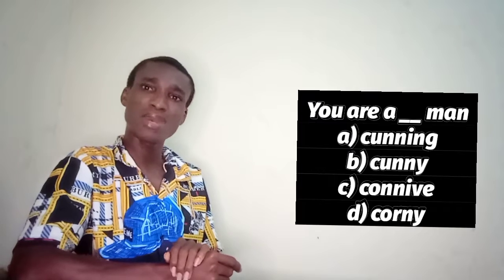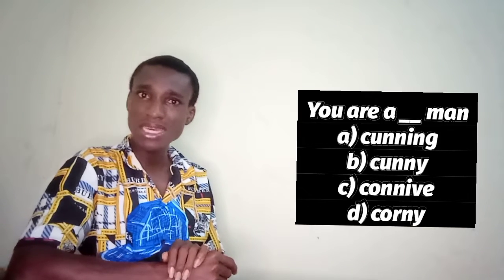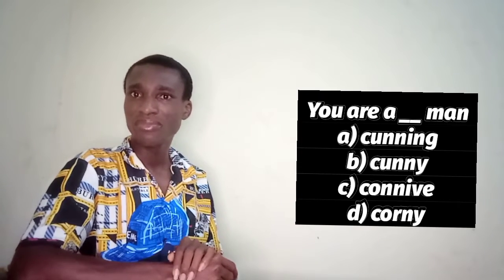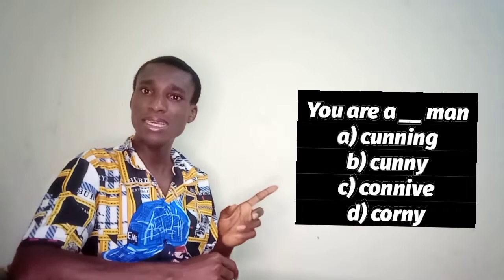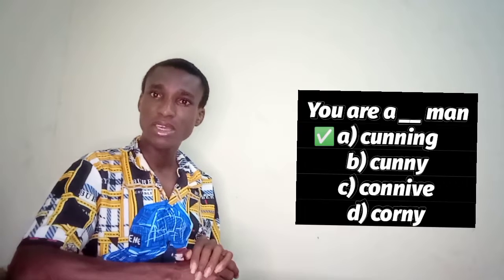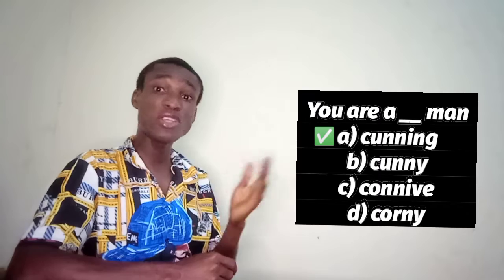Now check this out. You are a cunning man. Would you say 'corny man,' 'connive man,' or 'cunning man'? The right answer is A — cunning, spelled C-U-N-N-I-N-G, double N-I-N-G. That is the correct word. If you've been using the other ones before now, stop using them.